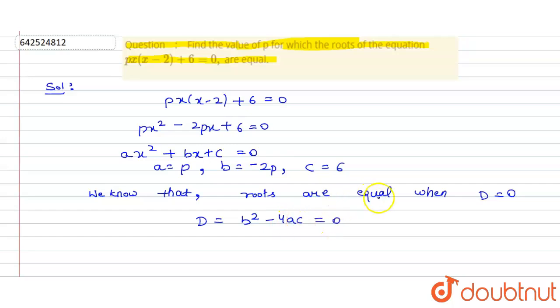It needs to be 0, so we have B is minus 2P, A is P, and C is 6.